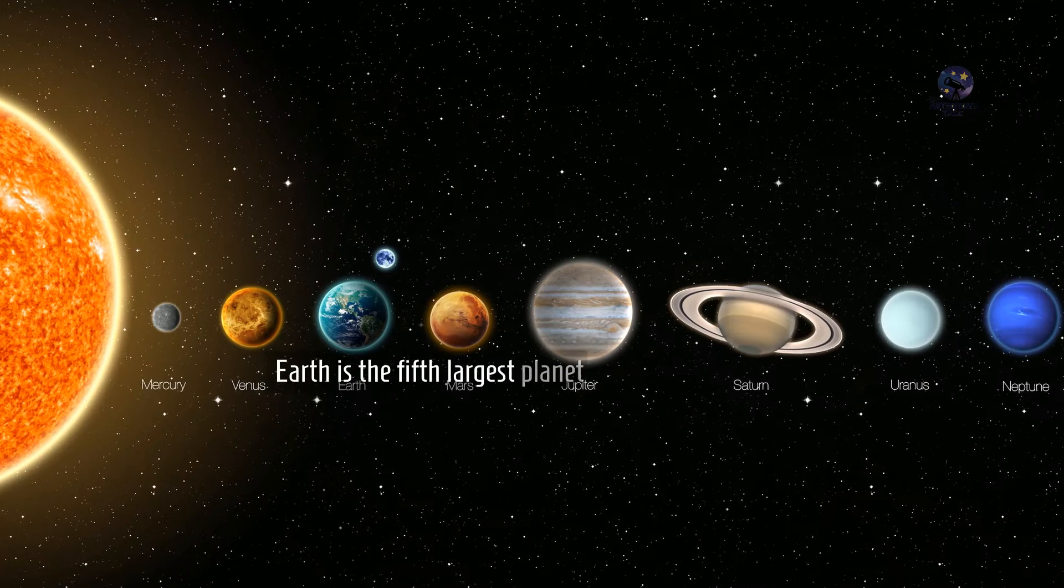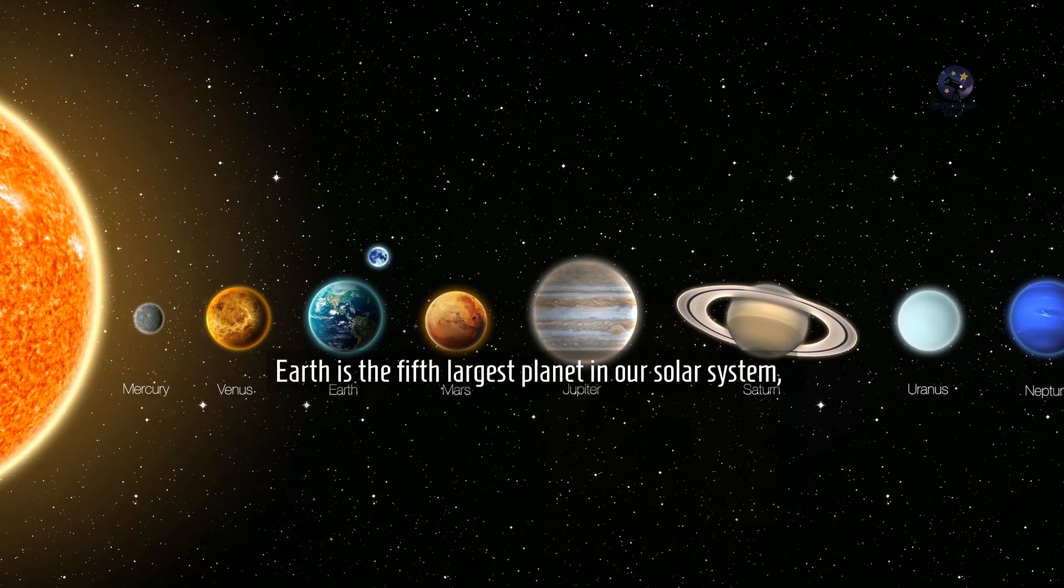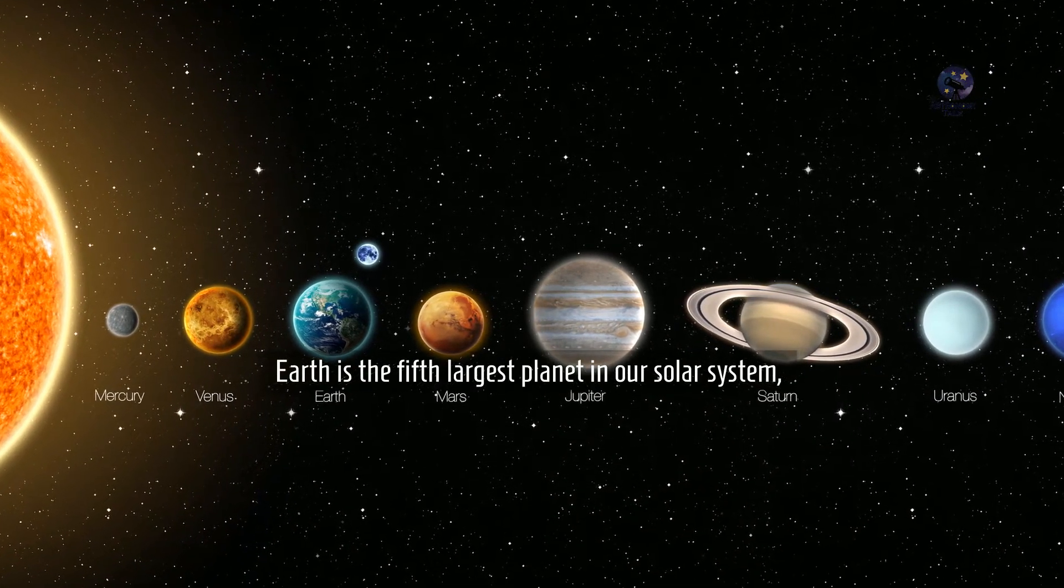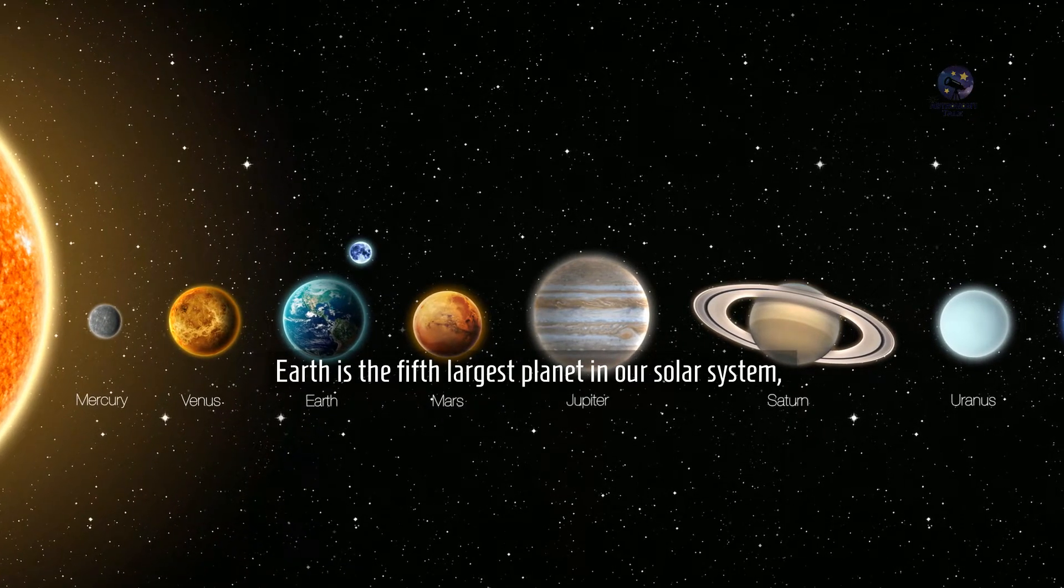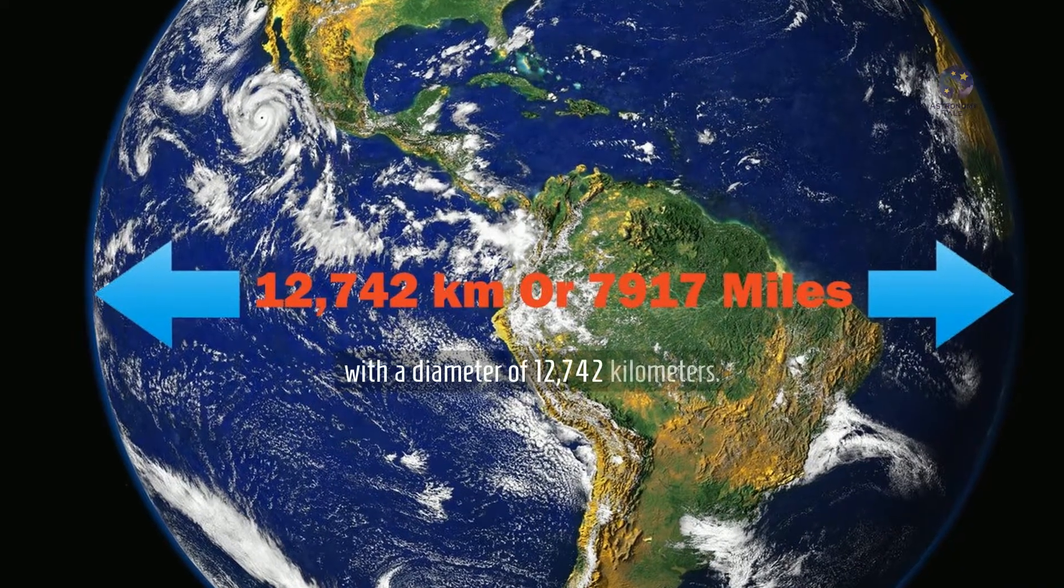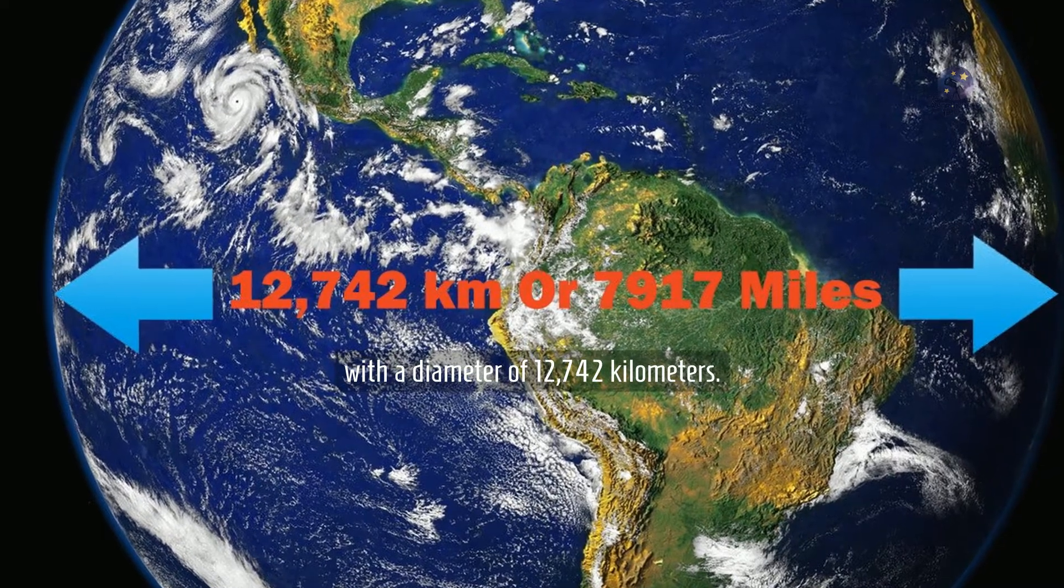Earth is the fifth largest planet in our solar system with a diameter of 12,742 km.